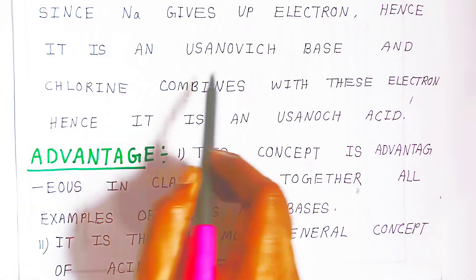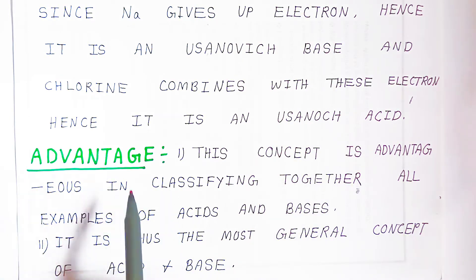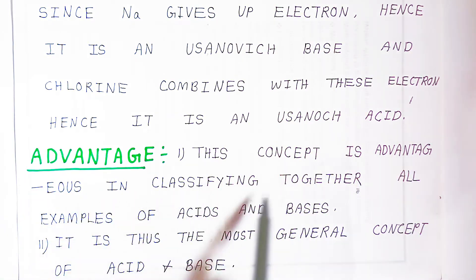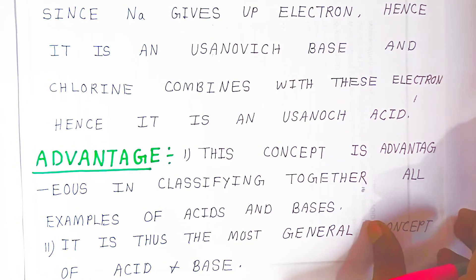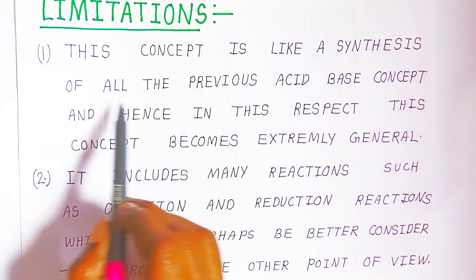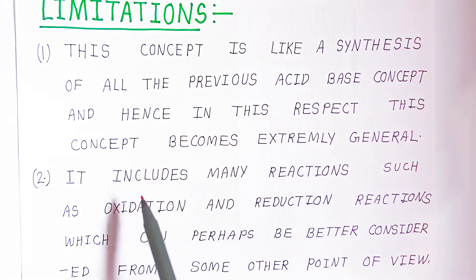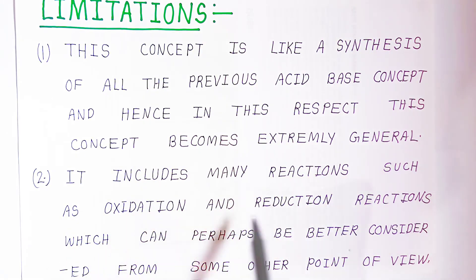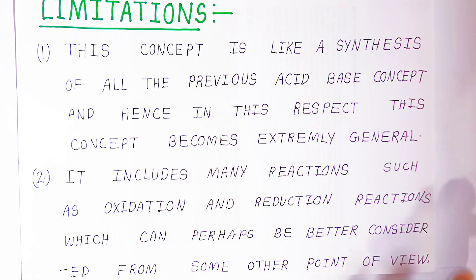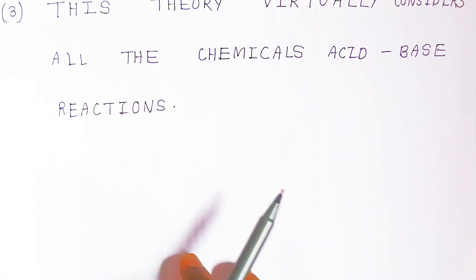Since sodium gives up electrons, it is a Usanovich base, and since chlorine combines with these electrons, it is a Usanovich acid. The advantage of this concept is that it classifies together all examples of acids and bases — it is the most general concept of acids and bases. The limitation is that it becomes extremely general, including oxidation-reduction reactions which might be better considered from another point of view.